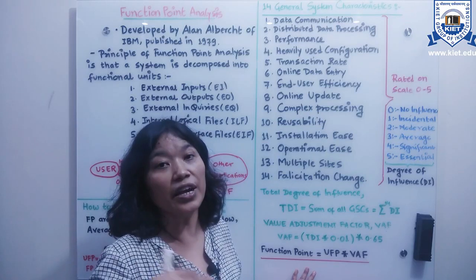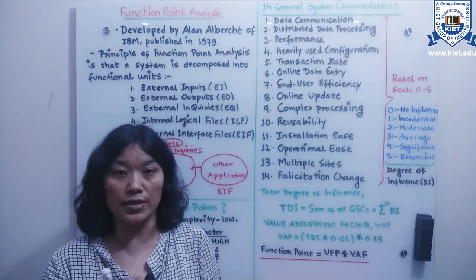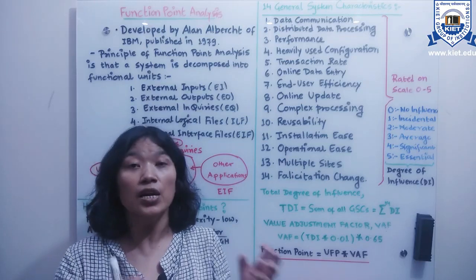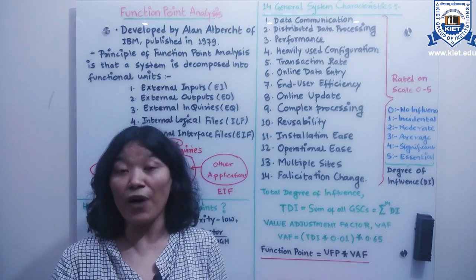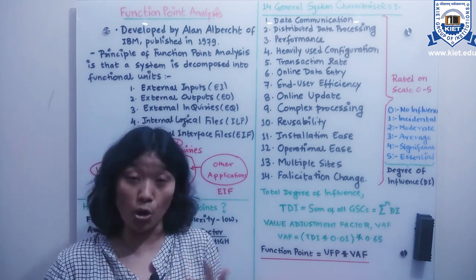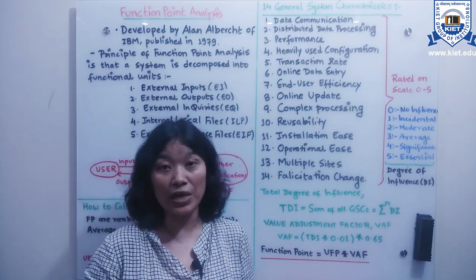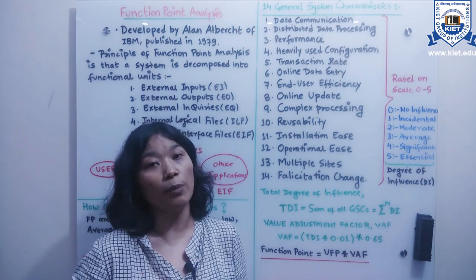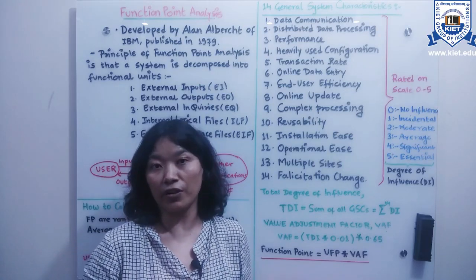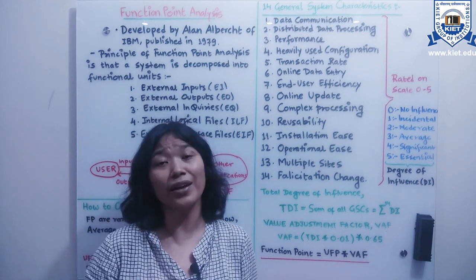The higher the function point, the greater the effort any software system would require. Once the function point value is known, we can also easily calculate productivity as function points per person-month, cost as rupees per function point, and documentation as number of pages per function point. So evaluating function points allows us to estimate productivity, cost, documentation, and other effort metrics.